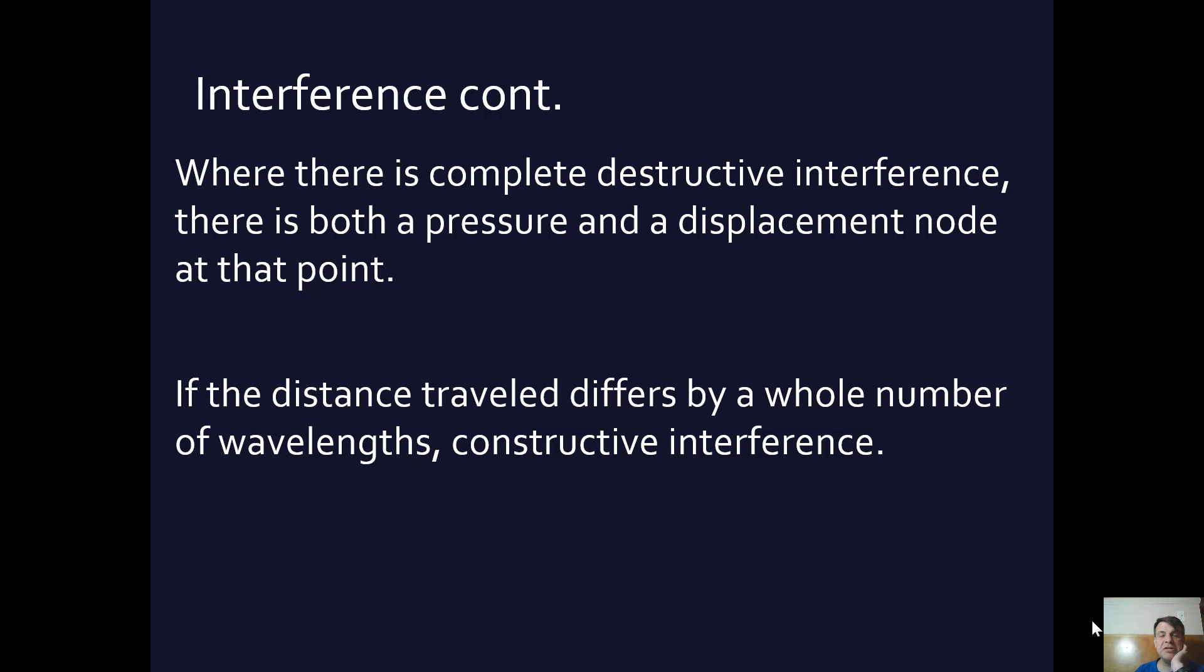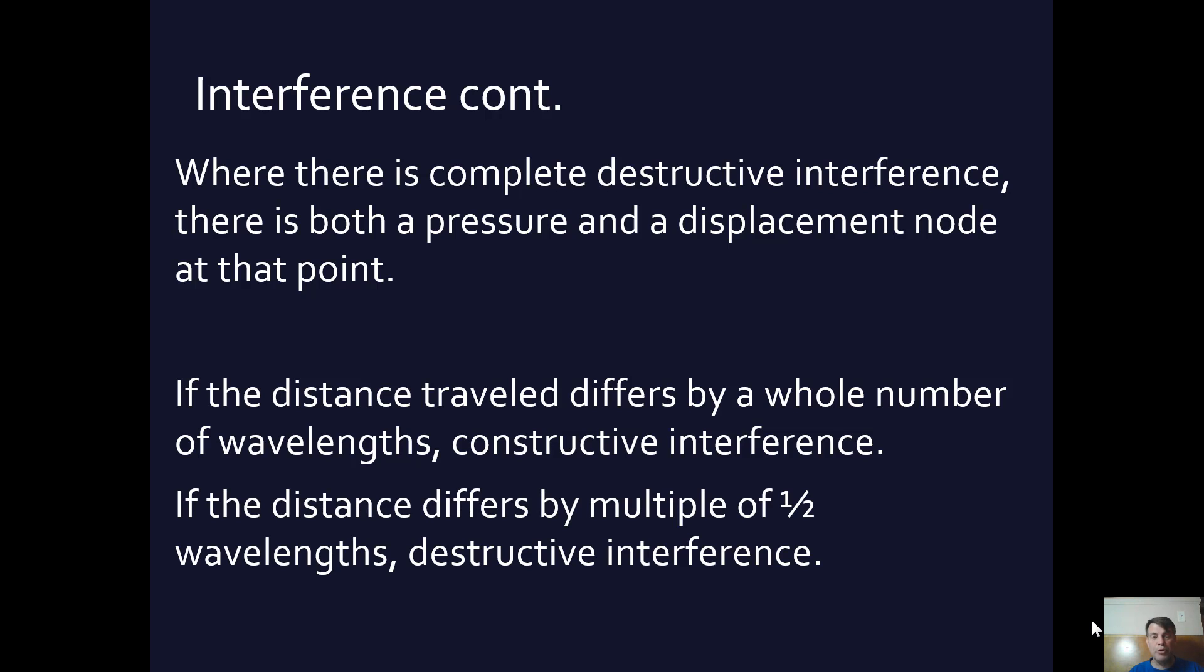Now if the distance that's traveled, say you have two waves, if the distance traveled differs by a whole number of wavelengths, you're going to have constructive interference because they're going to arrive, the parts of the wave are going to arrive in sync with each other in phase and you're going to have this plus this kind of amplitude. On the other hand, if the distance differs by a multiple of a half, then you're going to have some sort of destructive interference because they're going to arrive out of sync with each other.